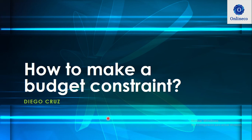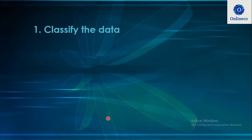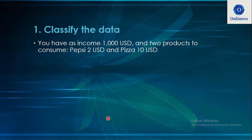Hi everyone, welcome to this video. We're going to develop how to make a budget constraint. The first step is to classify the data. Imagine you have an income of $1,000 and two products to consume: pizza, which costs $10, and Pepsi, which costs $2.